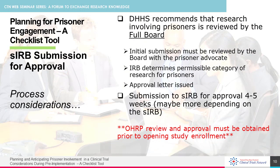Study teams should be aware that when submitting, the submission must be reviewed by the board with a prisoner advocate — which could potentially add more time to the review process, as each review board most likely does not have its own prisoner advocate. The IRB will review the submission and determine the classification of prisoner research. Teams should anticipate four to five weeks from the time of initial submission to approval, though it could be more depending on the single IRB. The approval letter should specify that OHRP review and approval must be obtained prior to study enrollment.